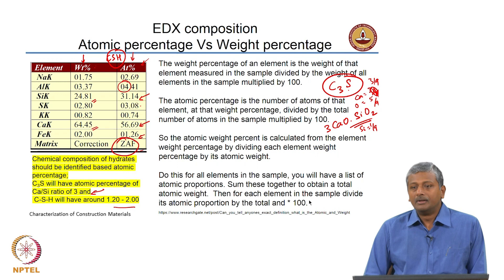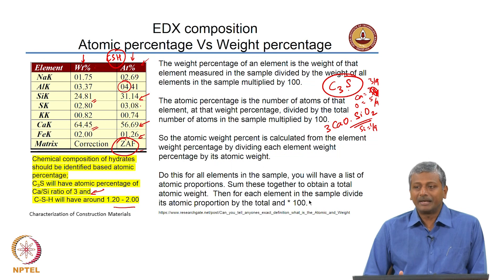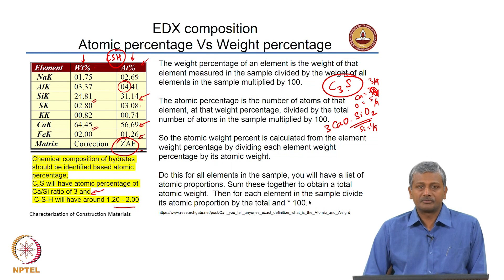You can also convert it to atomic percentages based on the molecular masses of the different elements that are present. The atomic percentages are what determine the actual phase composition. We saw an example of how C3S or C2S could be detected by X-ray analysis and you can get an estimate of the actual chemical composition of C3S or C2S.